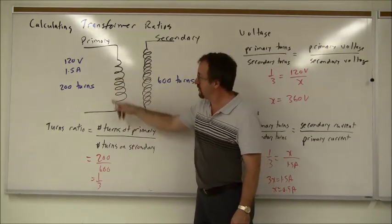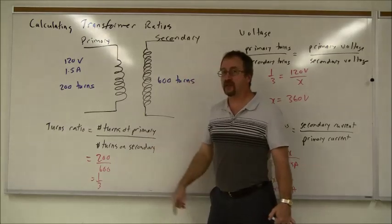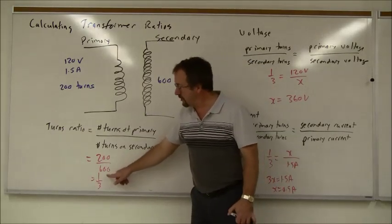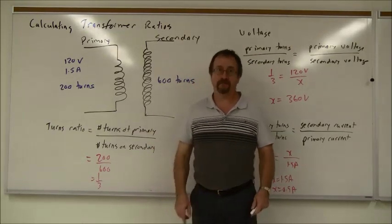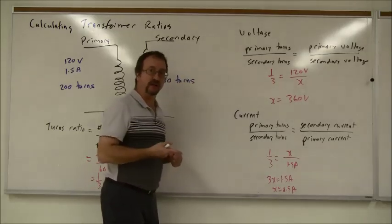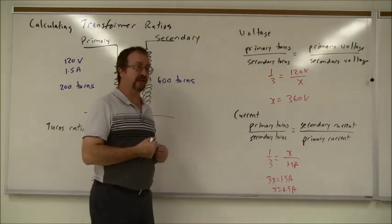So the turns ratio is 200 in the primary, to 600 in the secondary, divide both by 200 and you get one to three. So for every one turn in the primary, there's three turns in the secondary.